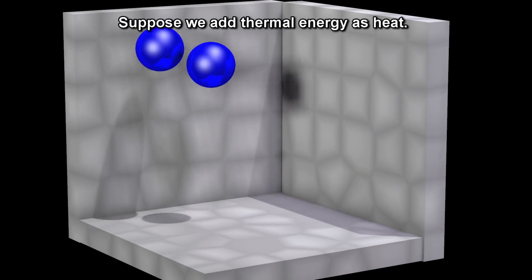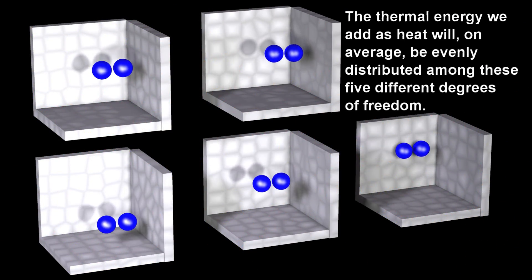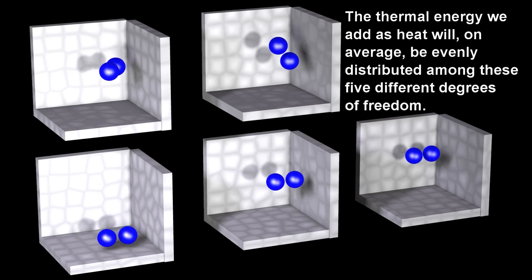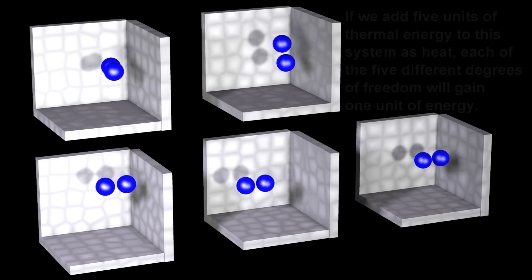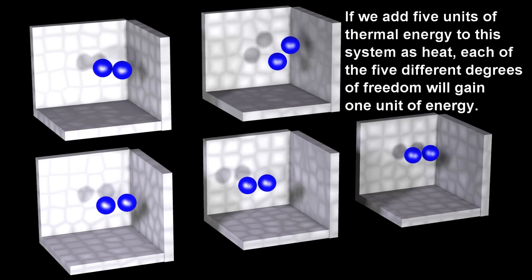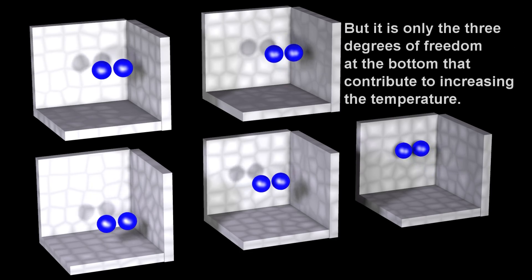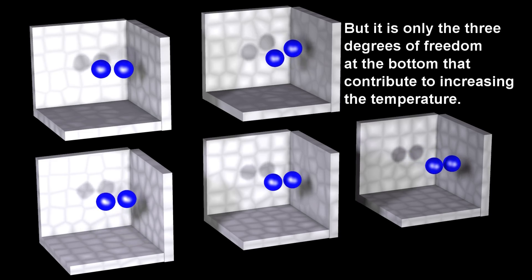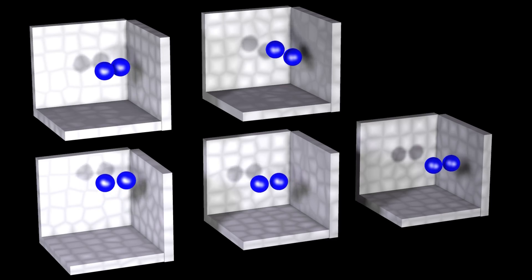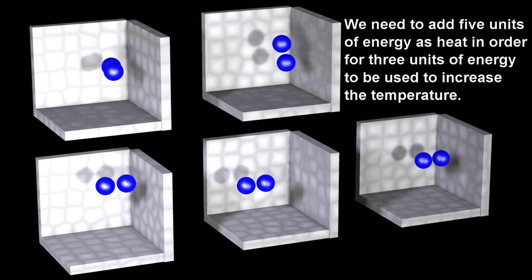Suppose we add thermal energy as heat. The thermal energy we add as heat will, on average, be evenly distributed among these five different degrees of freedom. If we add five units of thermal energy to this system as heat, each of the five different degrees of freedom will gain one unit of energy. But it is only the three degrees of freedom corresponding to translational motion that contribute to increasing the temperature. We need to add five units of energy as heat in order for three units of energy to be used to increase the temperature.